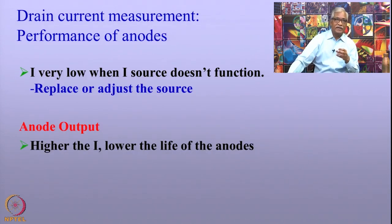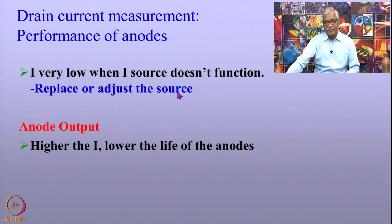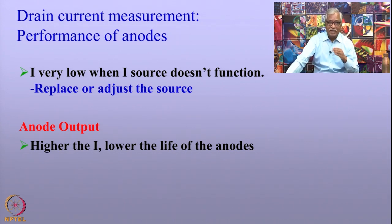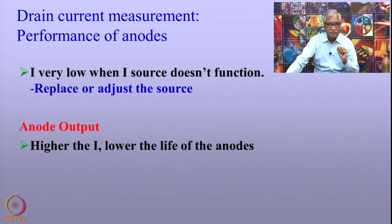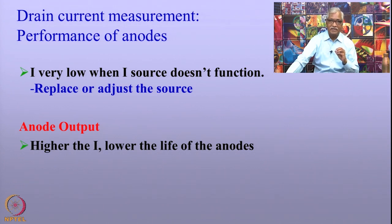Let me move on to the next technique: the drain current measurement technique. This technique is primarily used to determine the performance of the anodes. The anodes are the source of current; they disperse current into the soil, and from the anode the current goes into the soil and through the soil enters the pipeline, achieving cathodic protection. The current flowing from the anode to the pipeline is called the drain current.